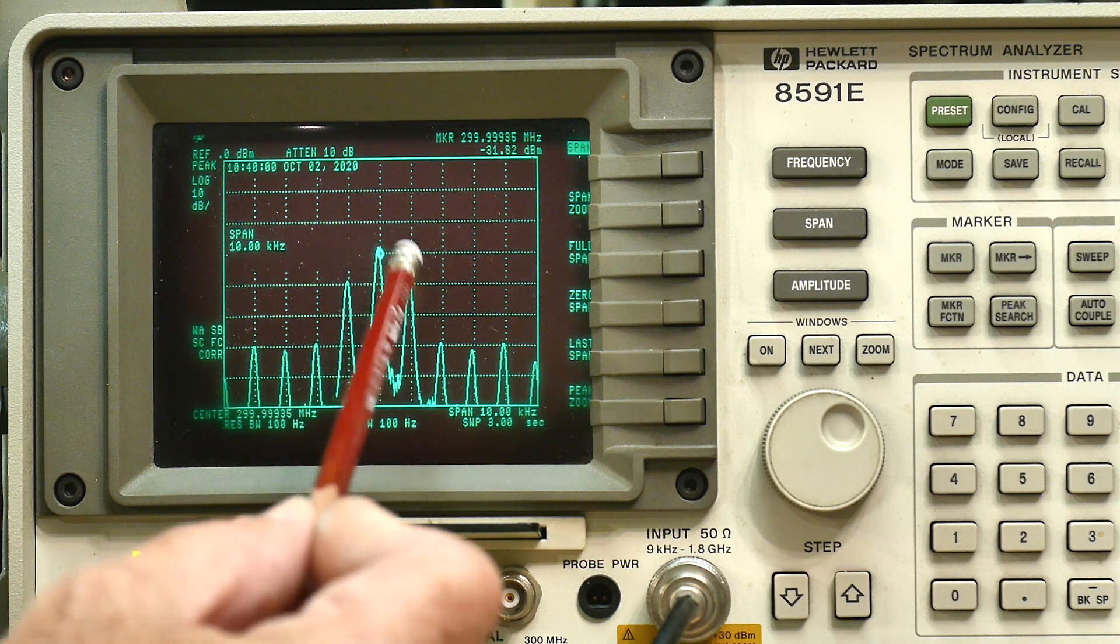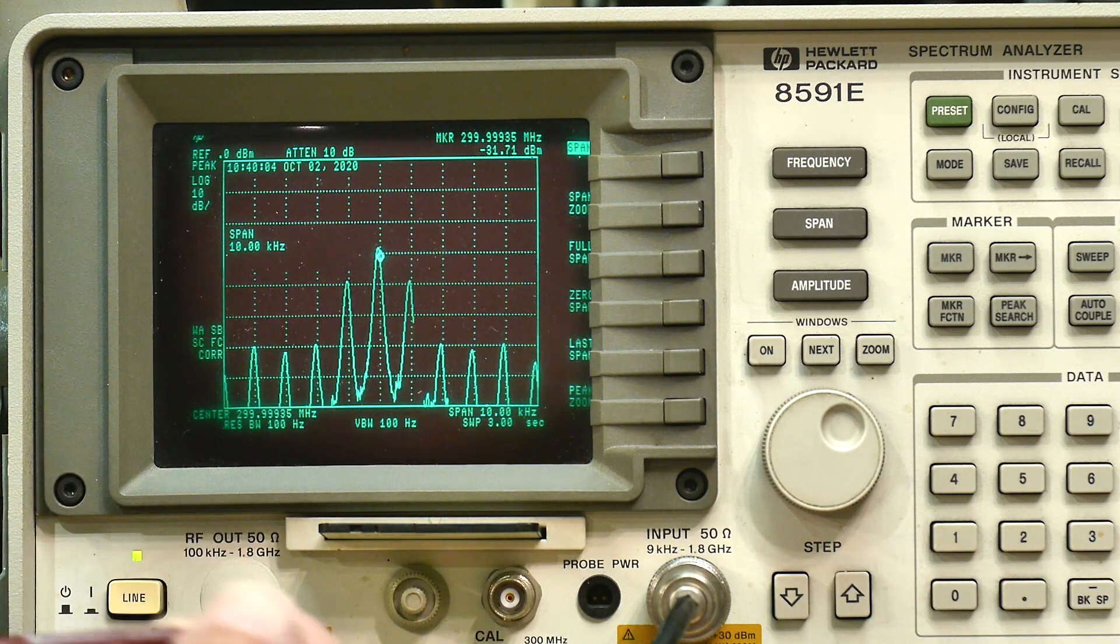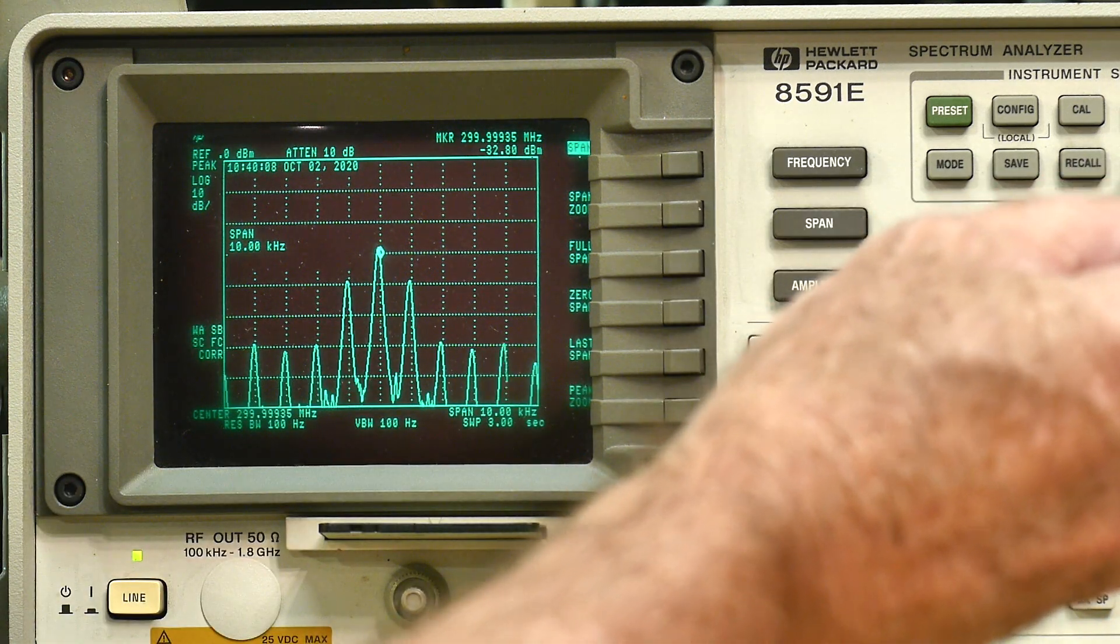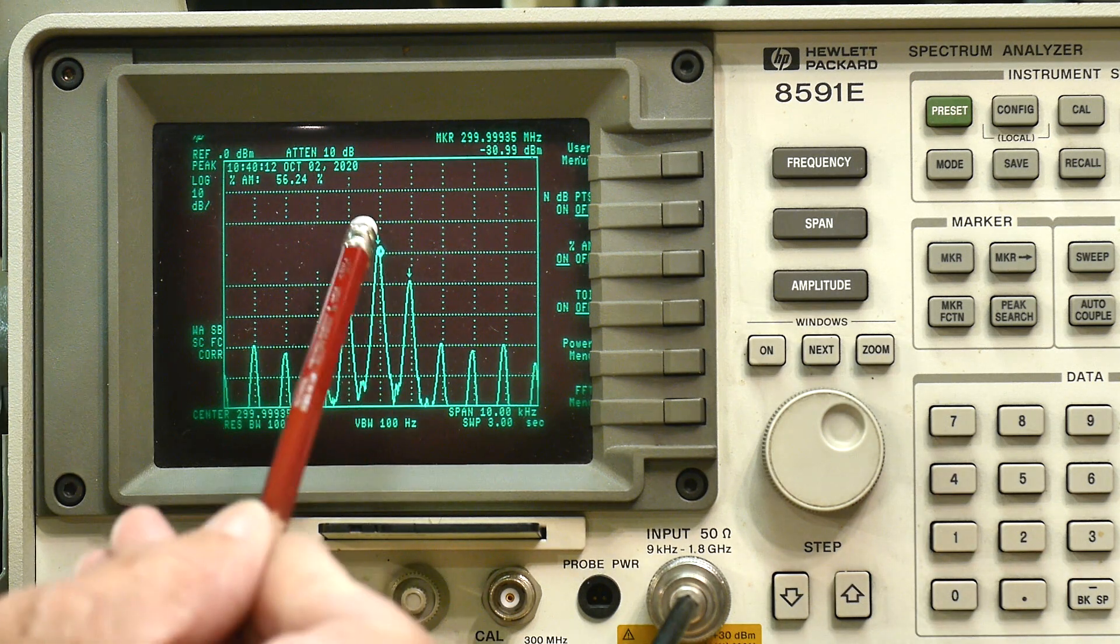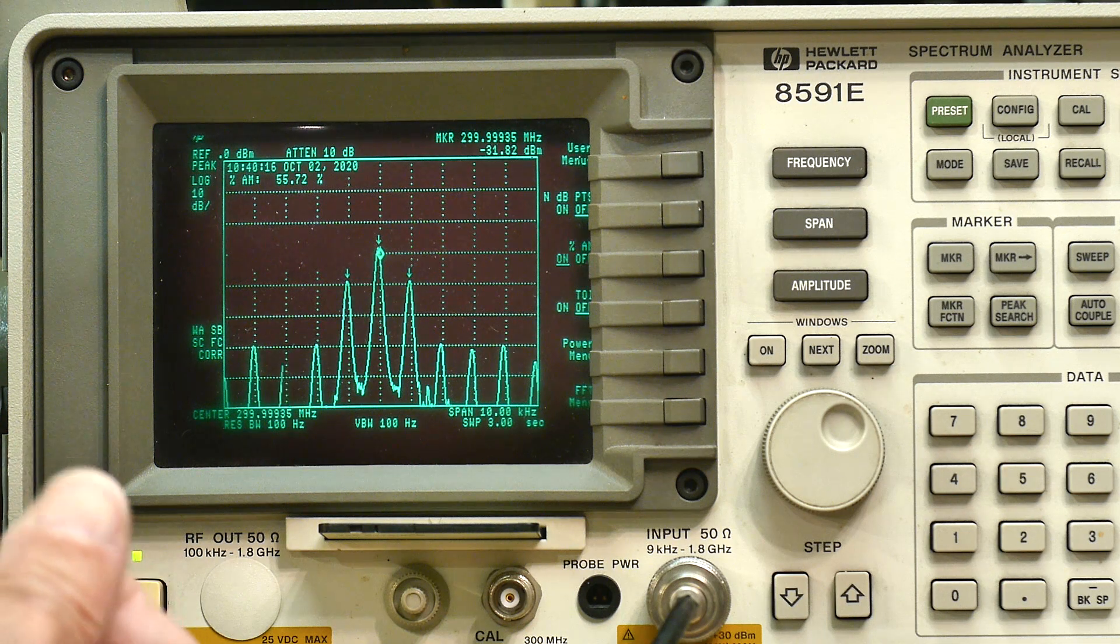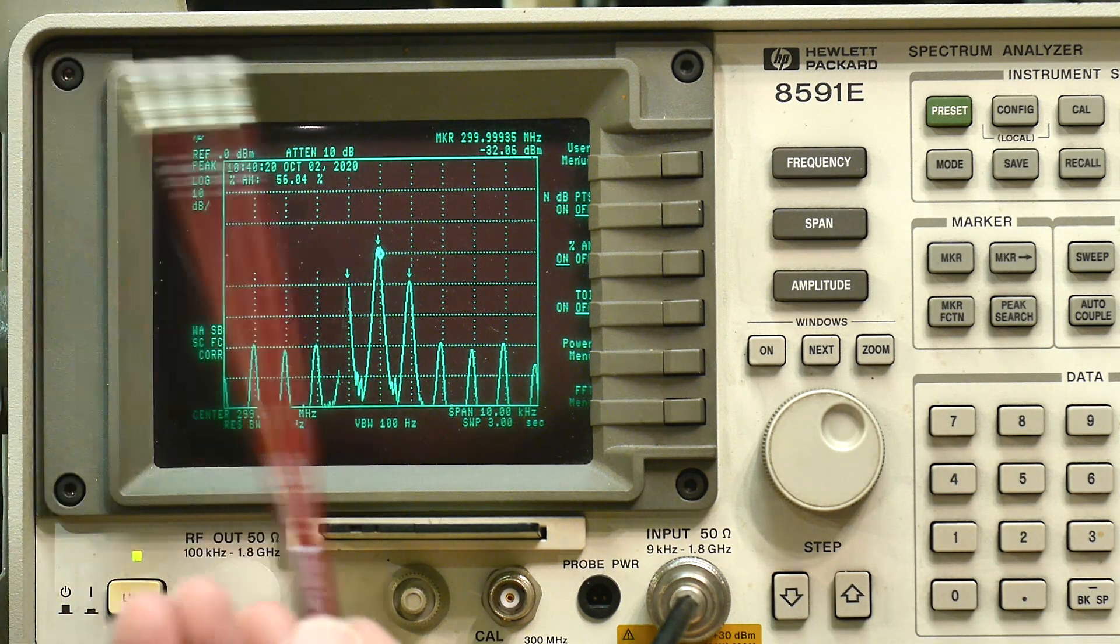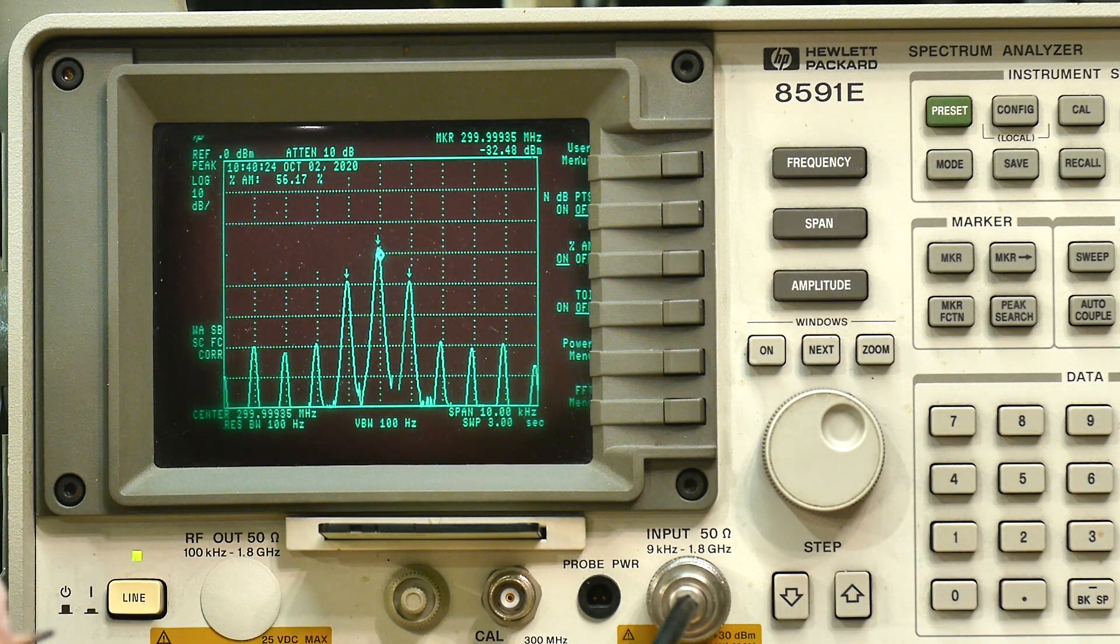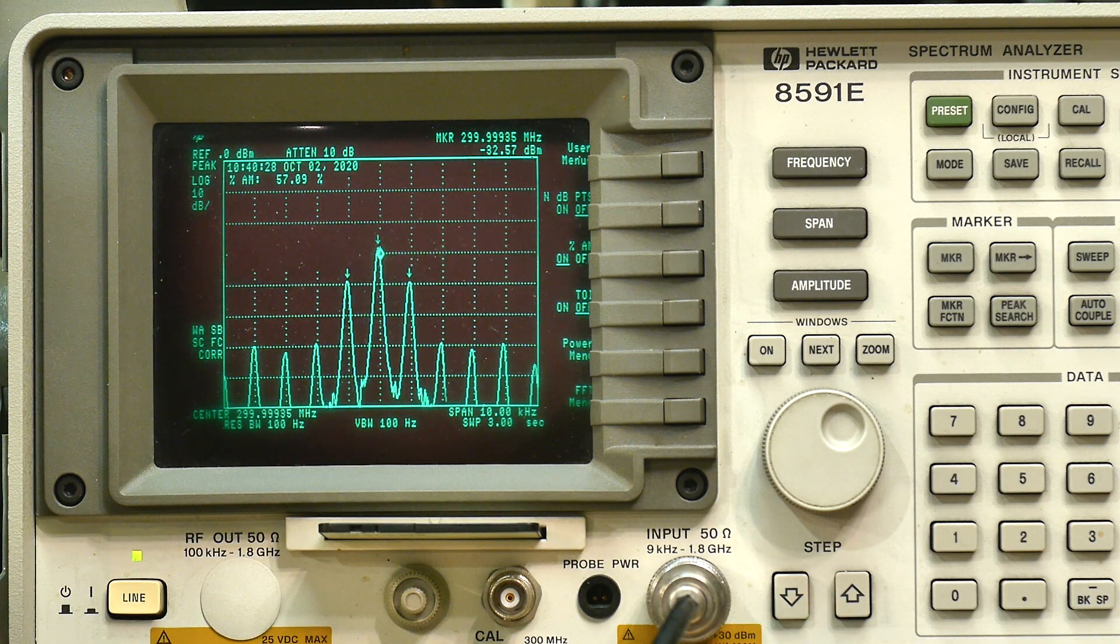Let's say we want to measure the AM modulation depth - that's the relationship between the carrier and the height of the two side lobes. We can do that manually but it actually has the built-in function. I hit measure AM and it automatically finds these three points and automatically measures them at 56.7 percent, 55, somewhere between 56 and 55% modulation. It's varying a bit, so automatic AM modulation - that's pretty cool.